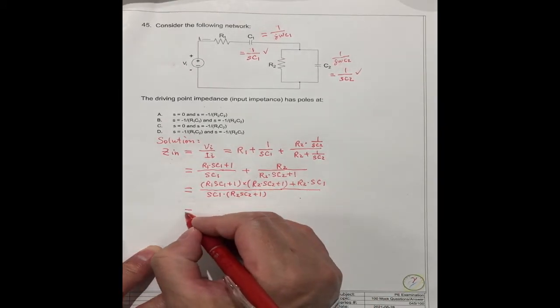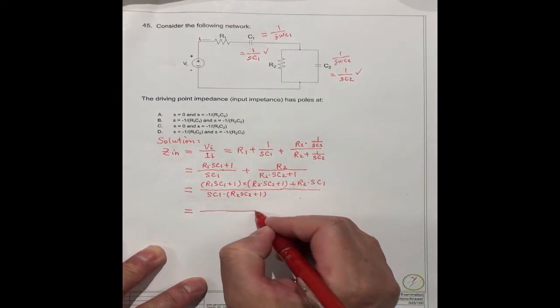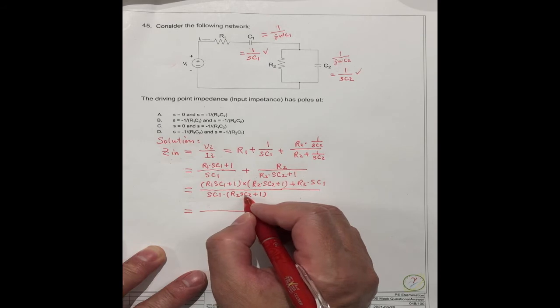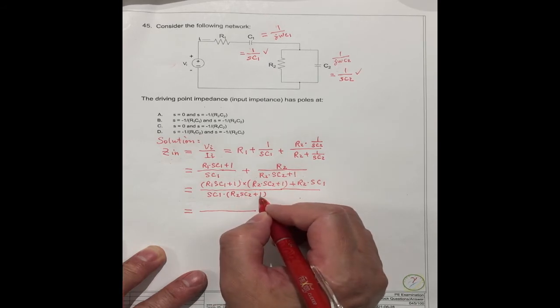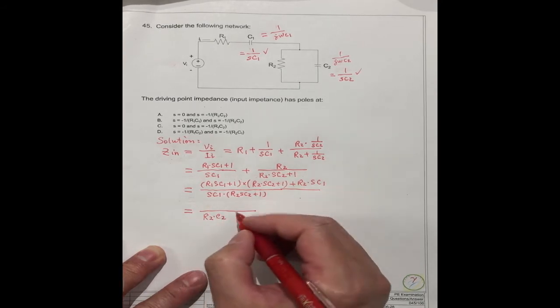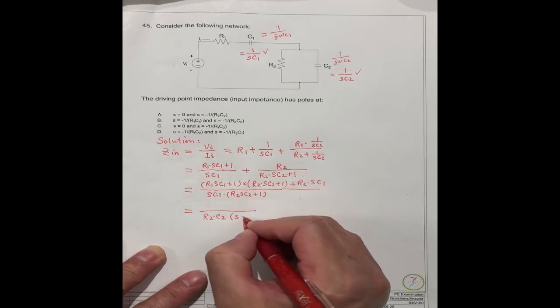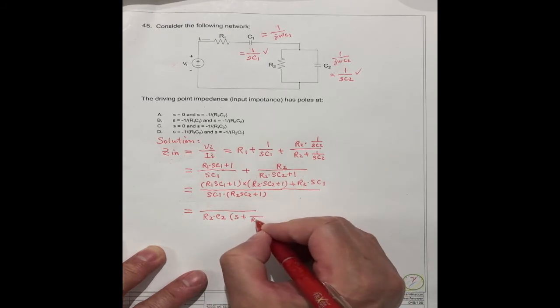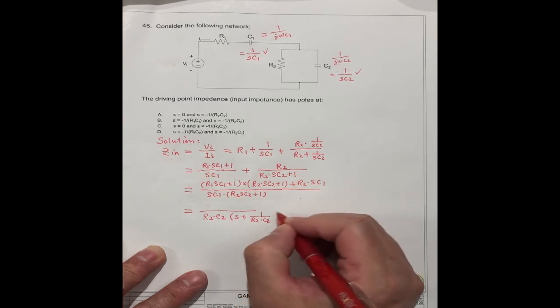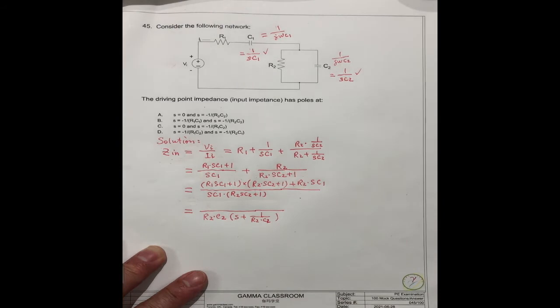We can simplify equal to this one. And for this, we take the R2C2 out. This should be divided by R2C2. So (R2C2·S + 1)/(R2C2).